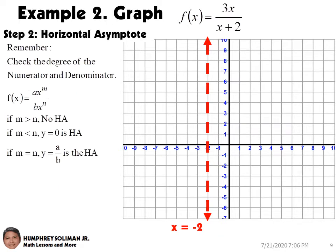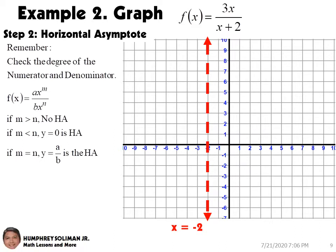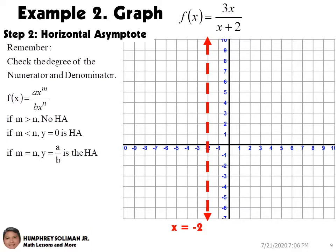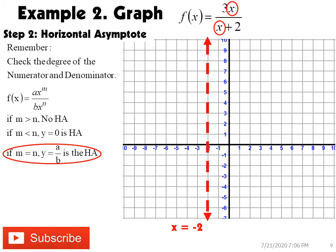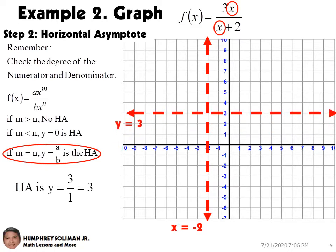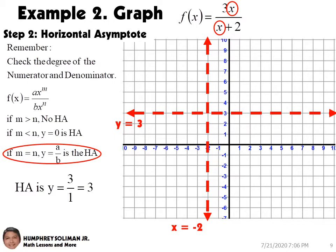For step number 2, we need to find the horizontal asymptote for our rational function. To do this, we need to check the degree of our numerator and the degree of our denominator. Since the degree of the numerator and denominator for this rational function is the same, our horizontal asymptote is y equals to the ratio of our leading coefficients. So our horizontal asymptote is y equals positive 3. We are now ready to graph our horizontal asymptote.